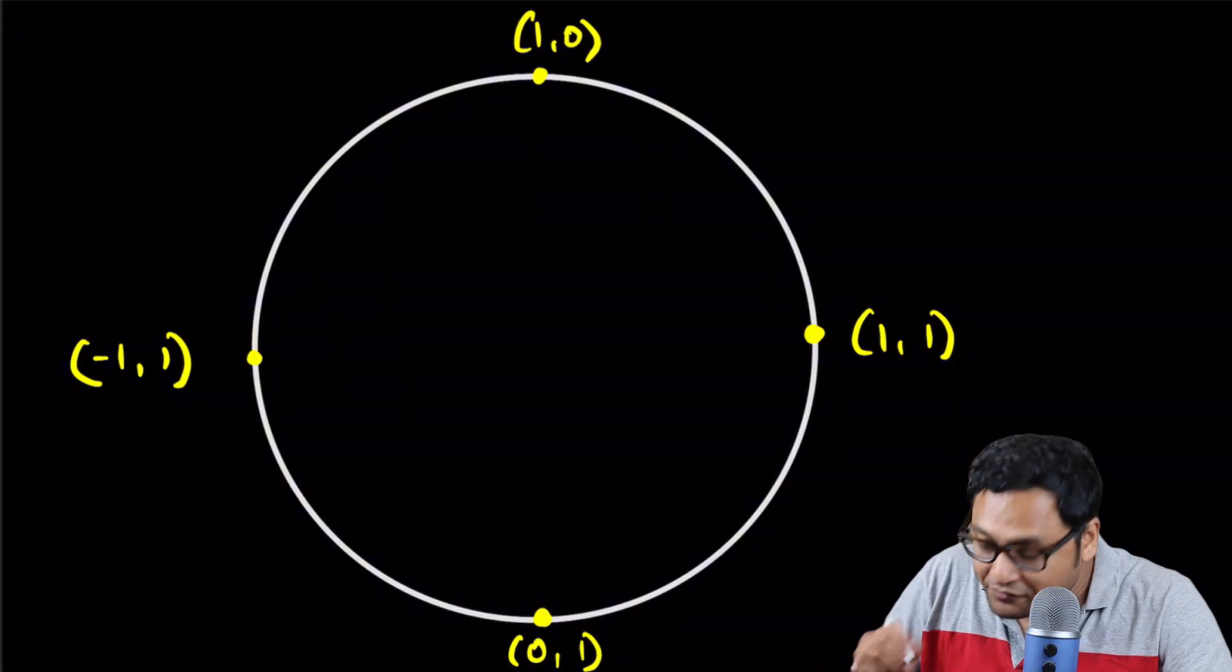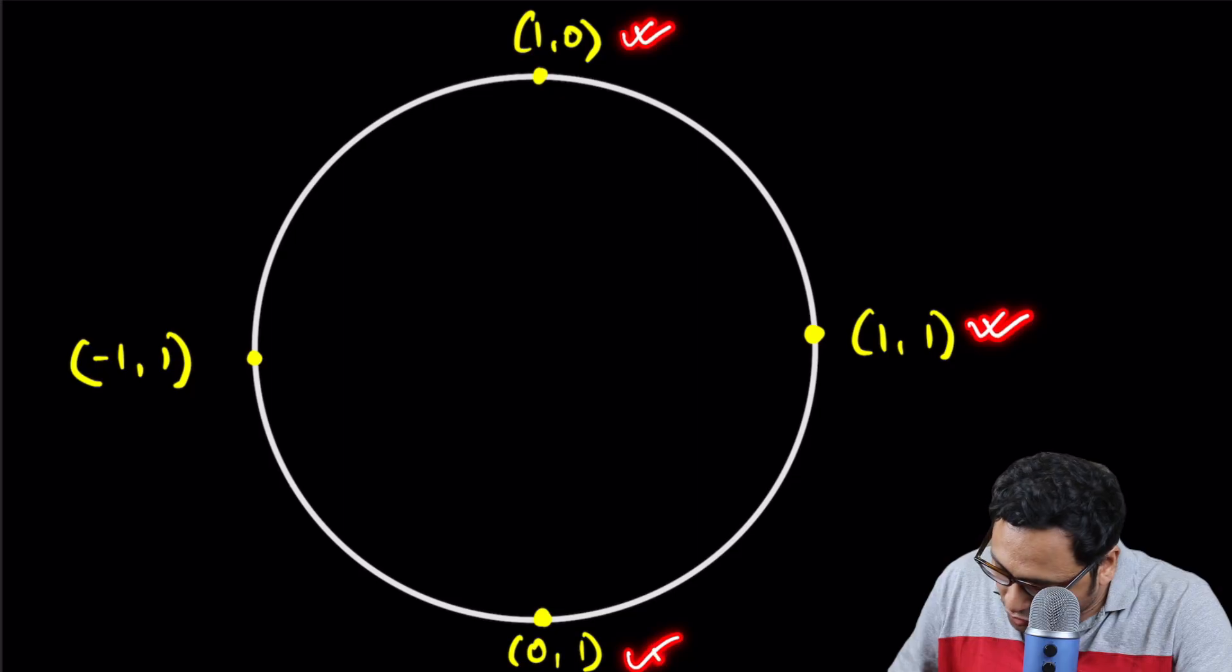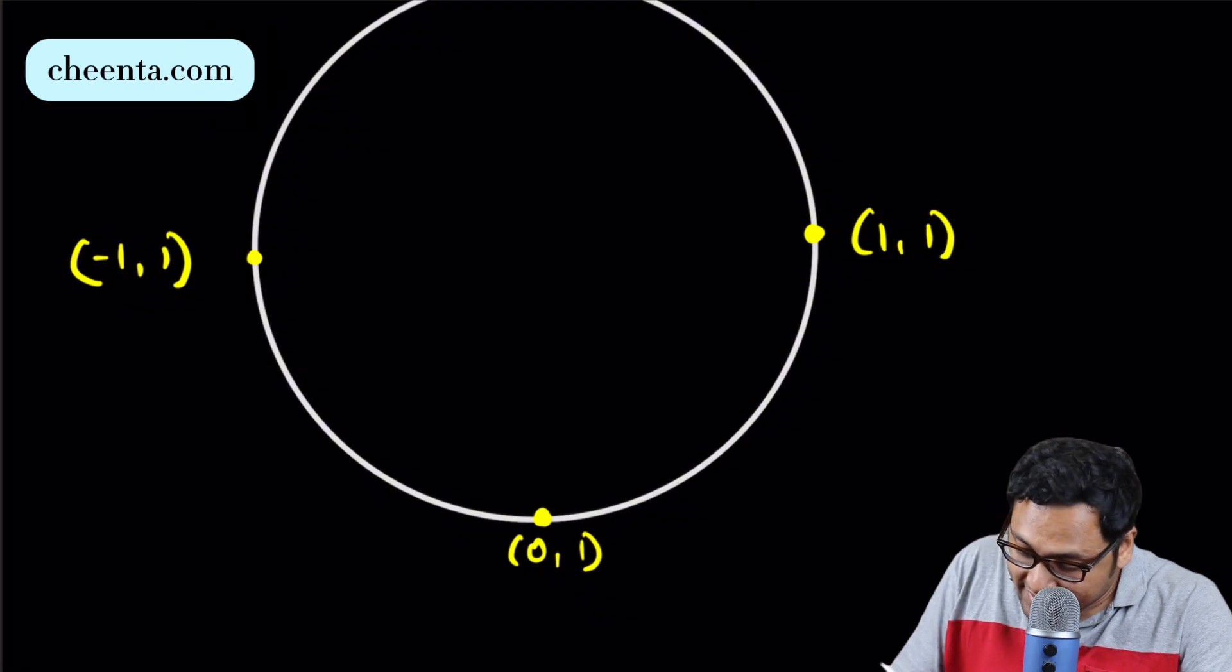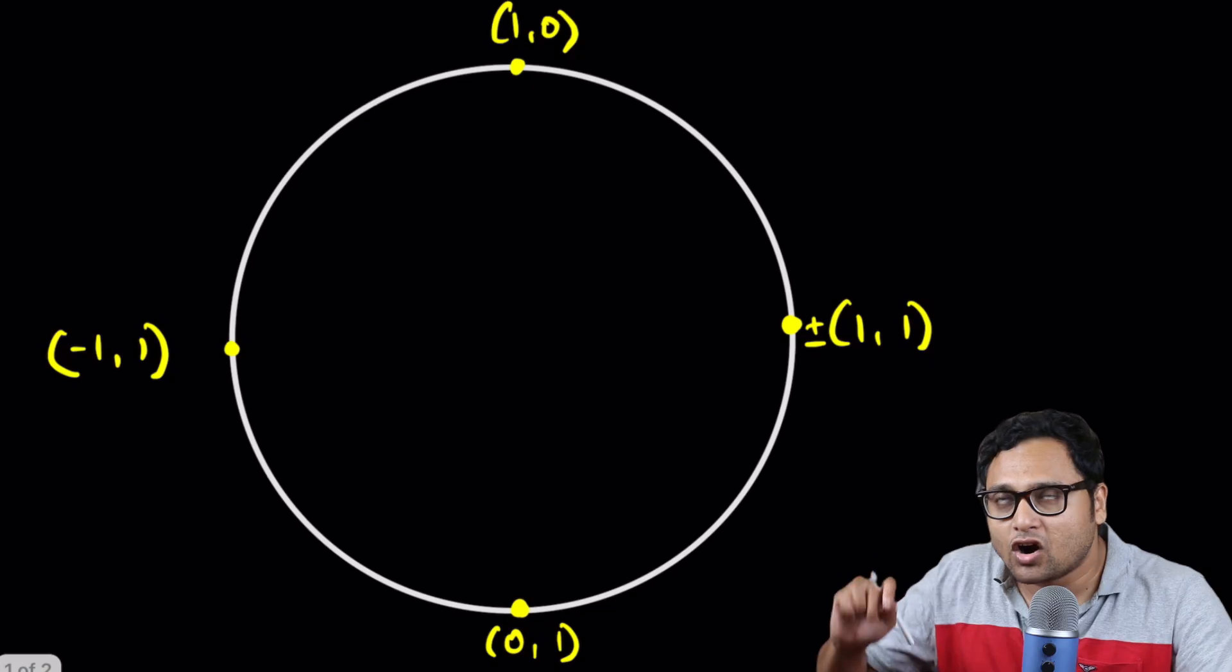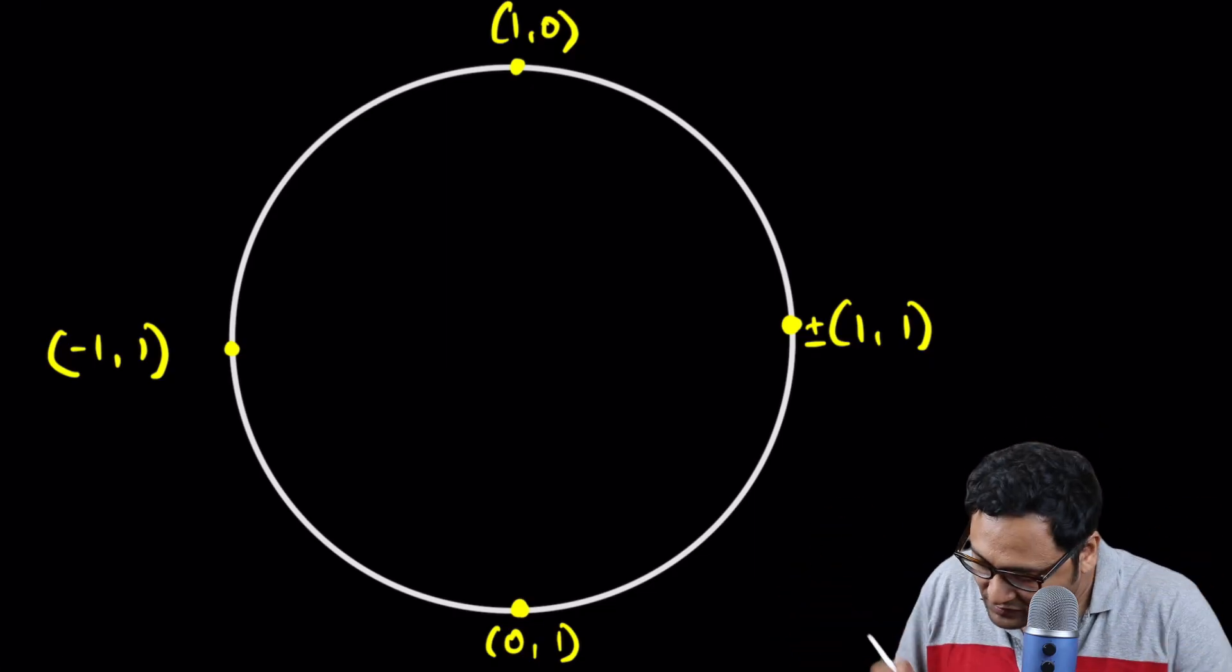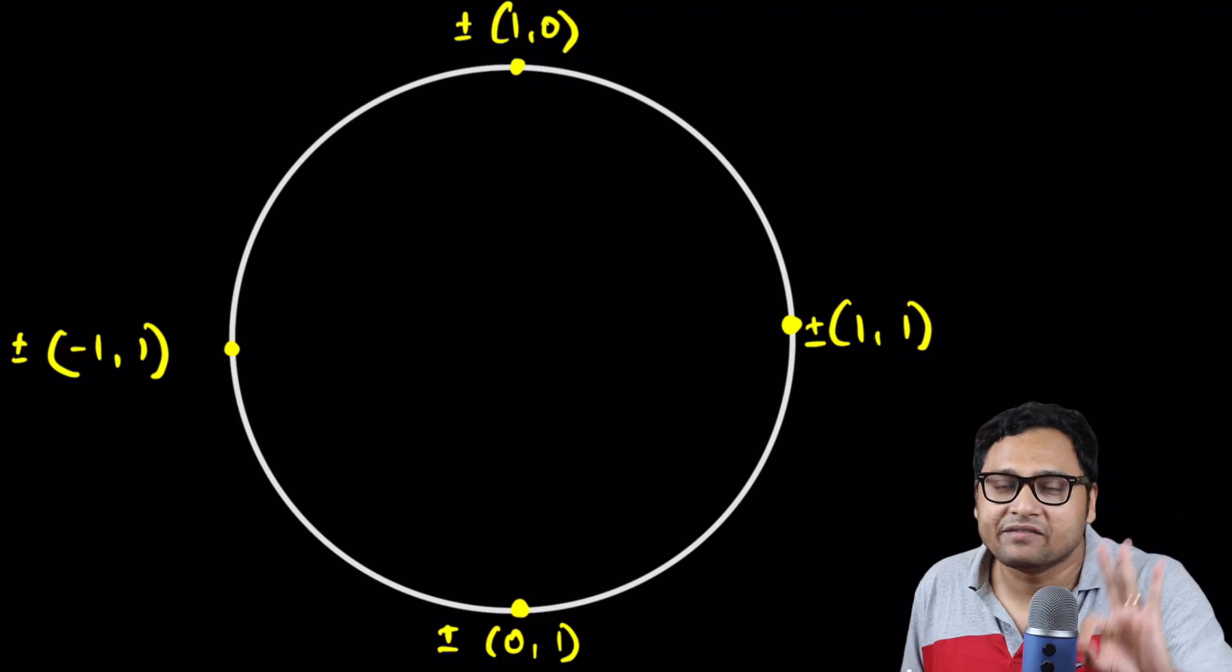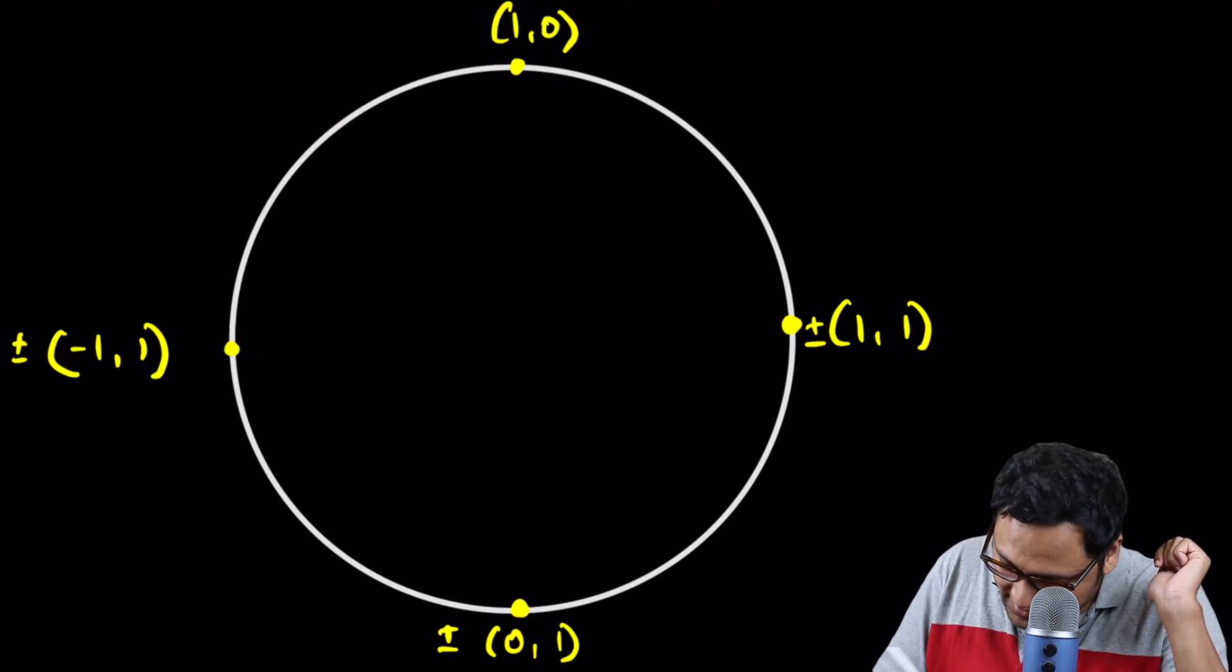First thing first, these are all members of P. These are all members of this set. So it's not just 1, 1. It is plus minus 1, 1. So it's 1, 1 or minus 1, minus 1. It's the same element. The same thing is true about each of them. To make things simpler, I will erase all these plus minus signs.